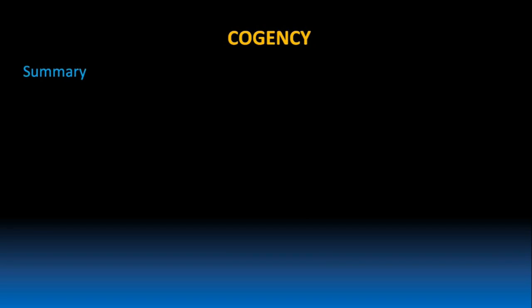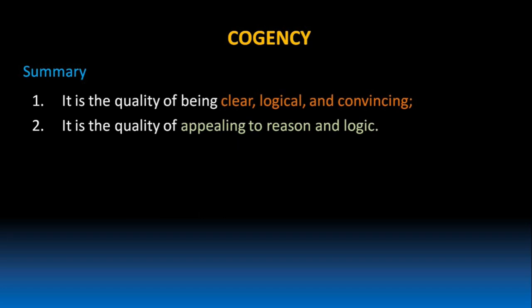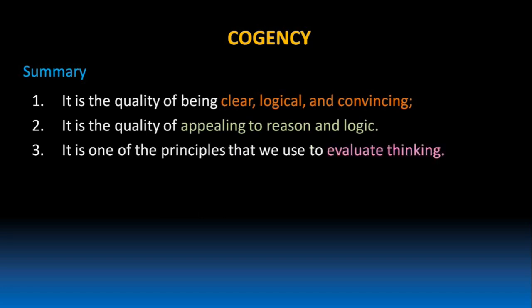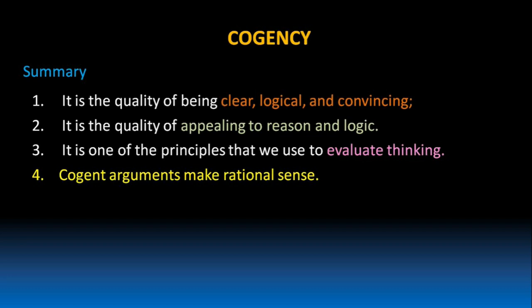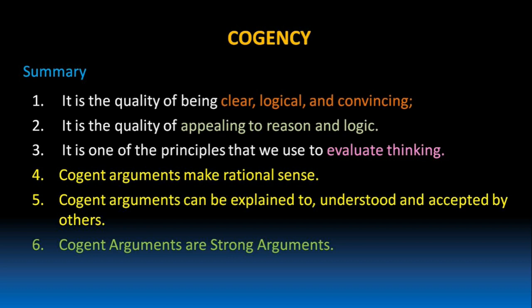Now let's go through a summary on cogency. Cogency is the quality of being clear, logical and convincing. It is the quality of appealing to reason and logic, and one of the principles we use to evaluate thinking. Cogent arguments make rational sense and can be explained, understood and accepted by others. Cogent arguments are strong arguments — these are arguments with high probability for the conclusion to become true.